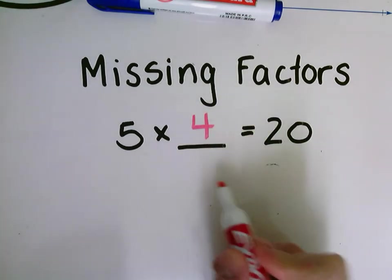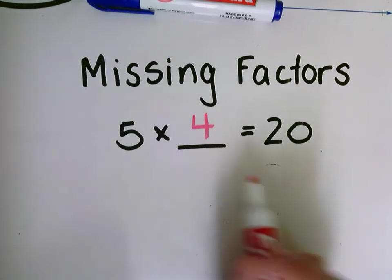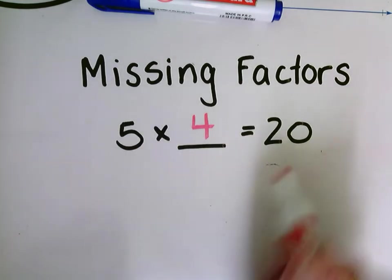I can do 5, 10, 15, 20. That was four groups of five. So five times four equals 20.